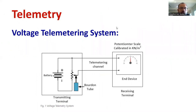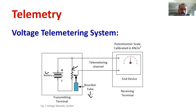I would like to introduce the schematic diagram of the voltage telemetry system. First of all, you can observe we have a DC supply. Then there is a voltage divider, which is connected with a burden tube. A burden tube is a device which is used to measure pressure without any power. As already mentioned, it is a DC landline telemetry system.